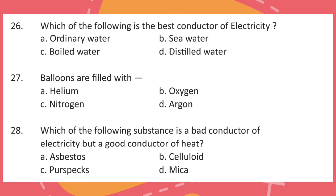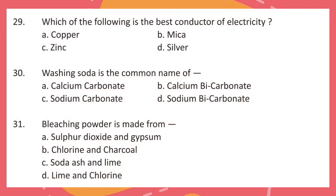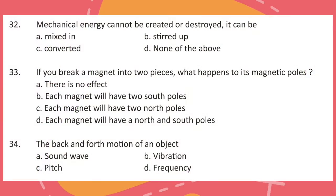Question 27. Balloons are filled with what? Question 28. Which of the following substance is a bad conductor of electricity but a good conductor of heat? Question 29. Which of the following is the best conductor of electricity? Question 30. Washing soda is the common name of what? Question 31. Bleaching powder is made from what? Question 32. Mechanical energy cannot be created or destroyed, it can be what?